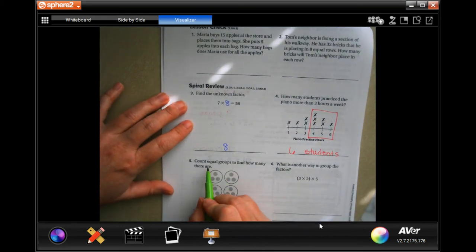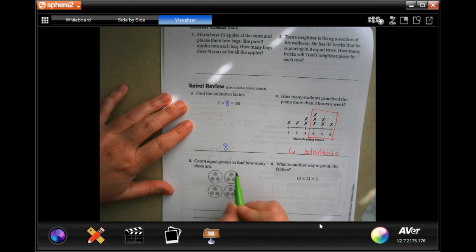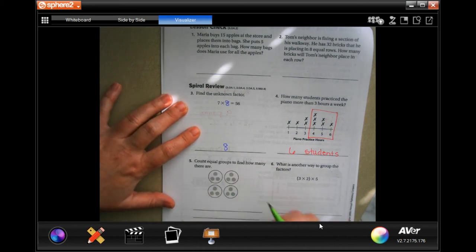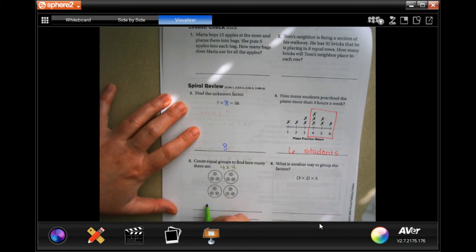Equal groups to find how many there are. That's four groups which have three in each group, so that's 12.